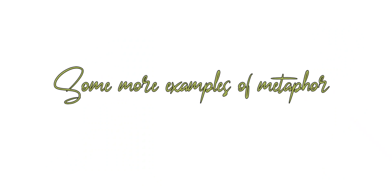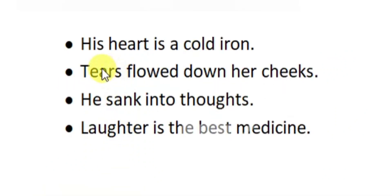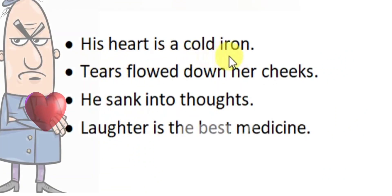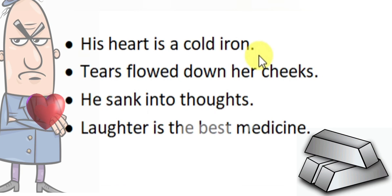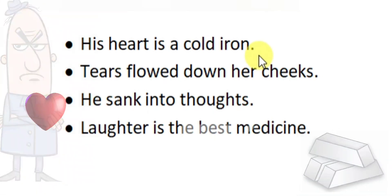Let's see some other examples of metaphor. 'His heart is a cold iron.' A cold iron is something that does not melt easily. Here, the person referred to as 'his' is very strict or rude. Thus, it is considered that his heart is just like a cold iron.